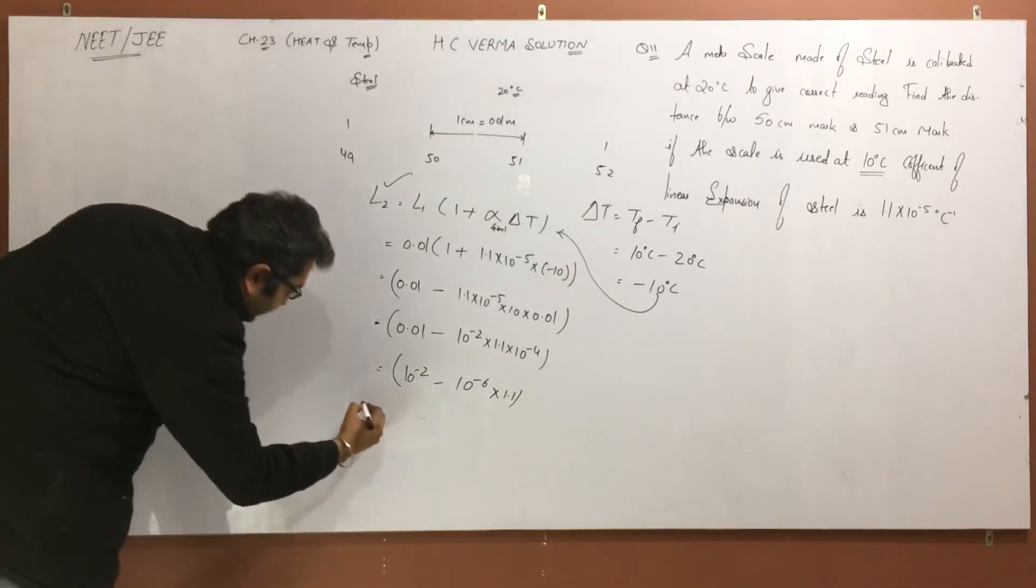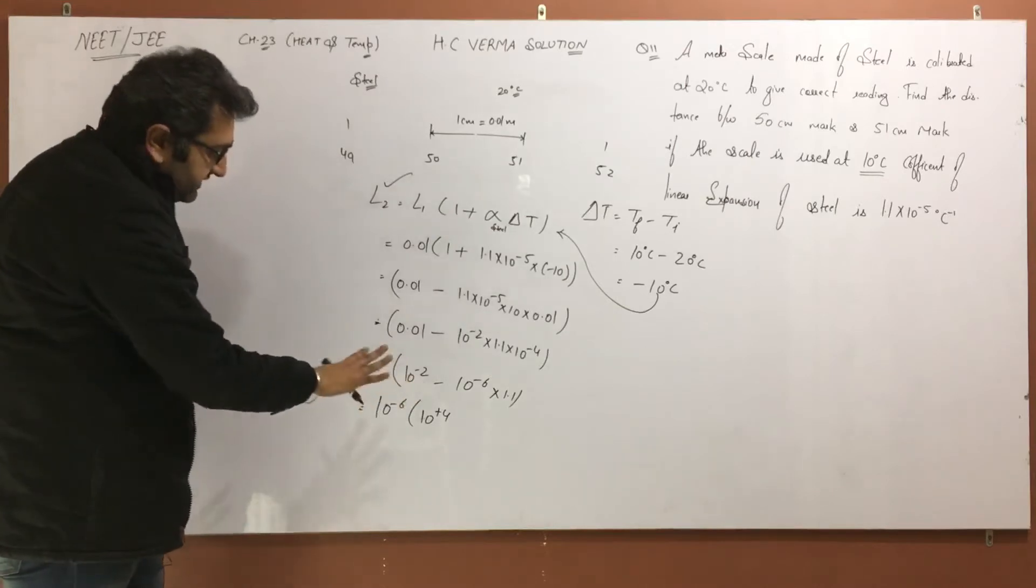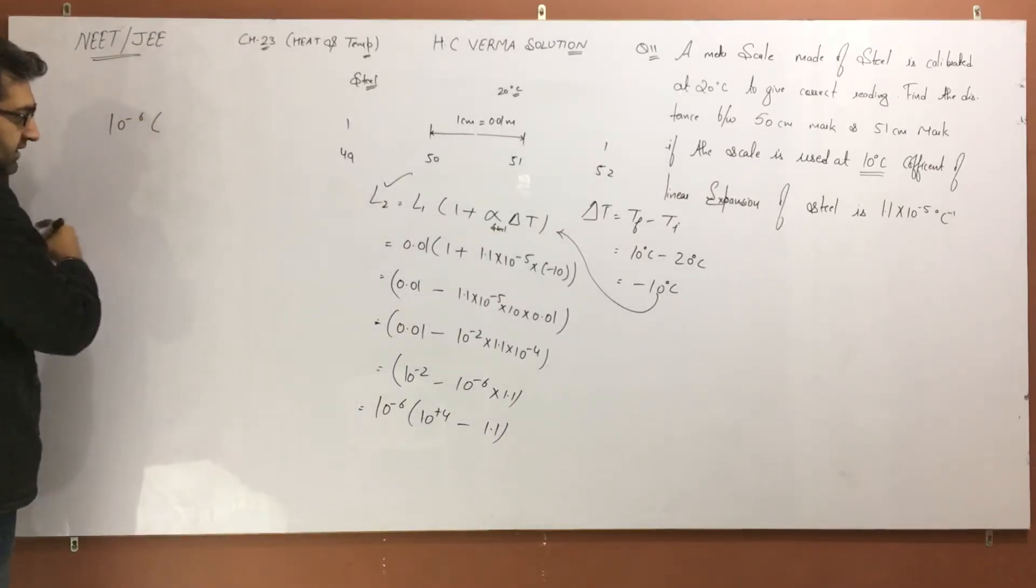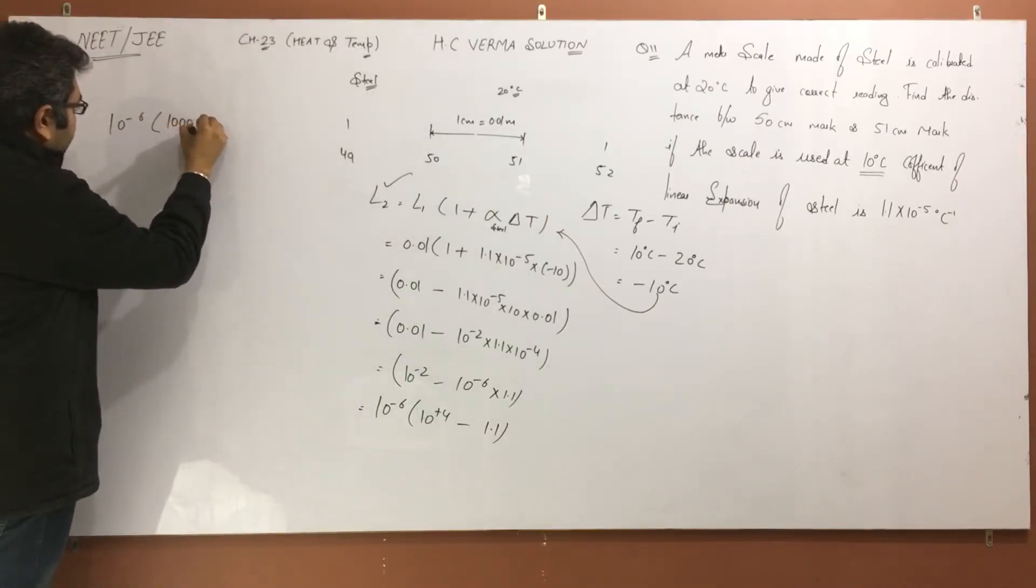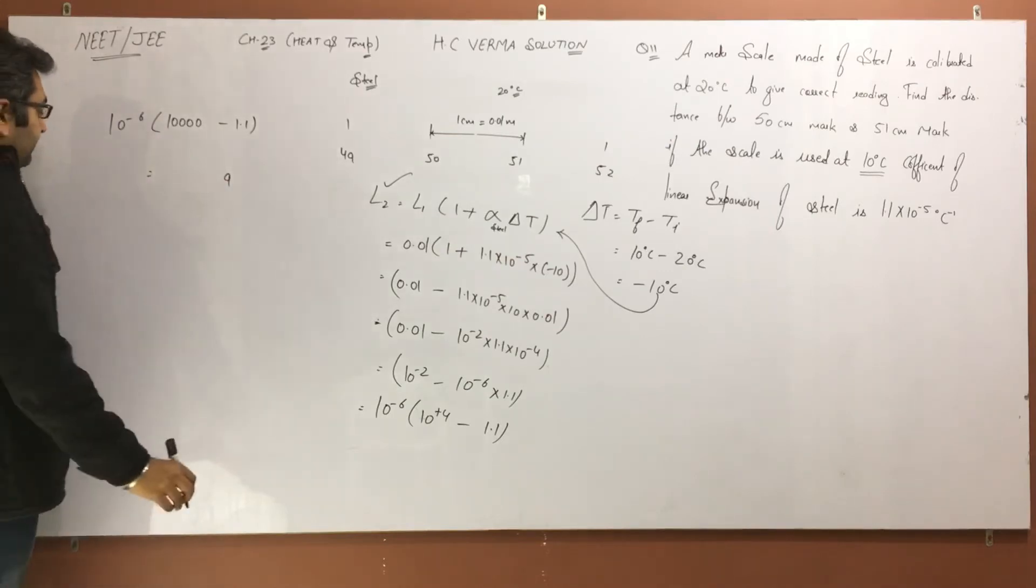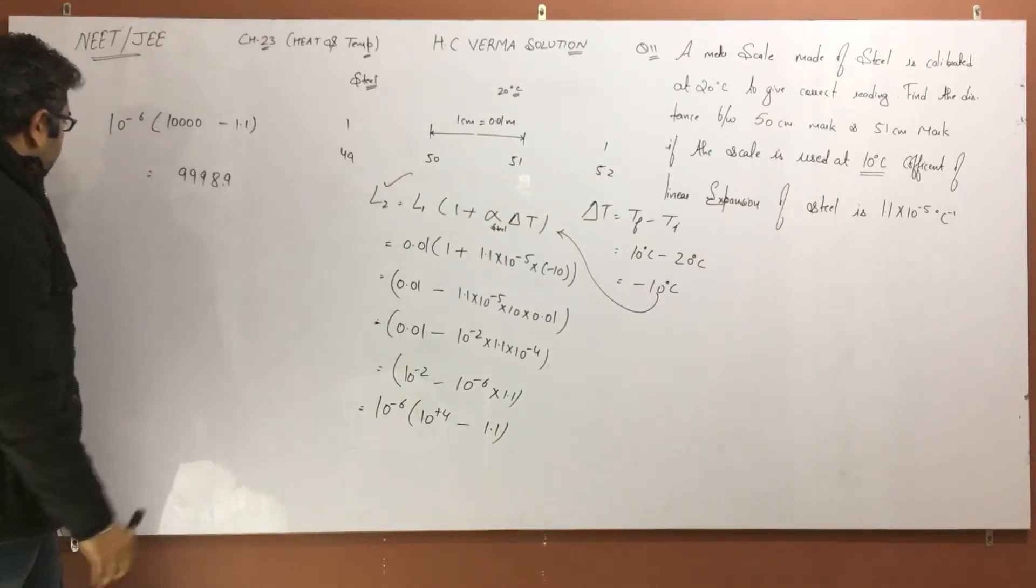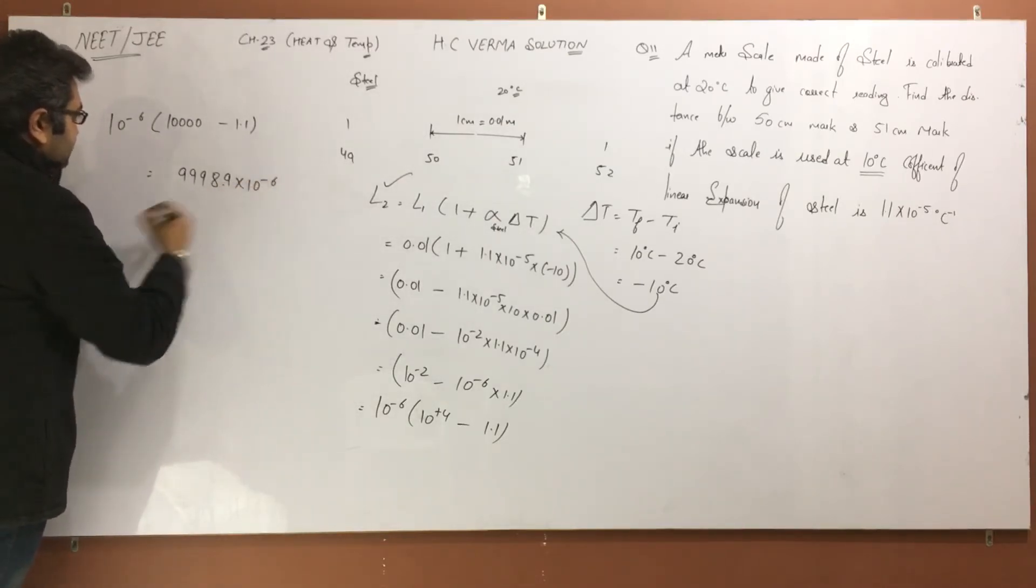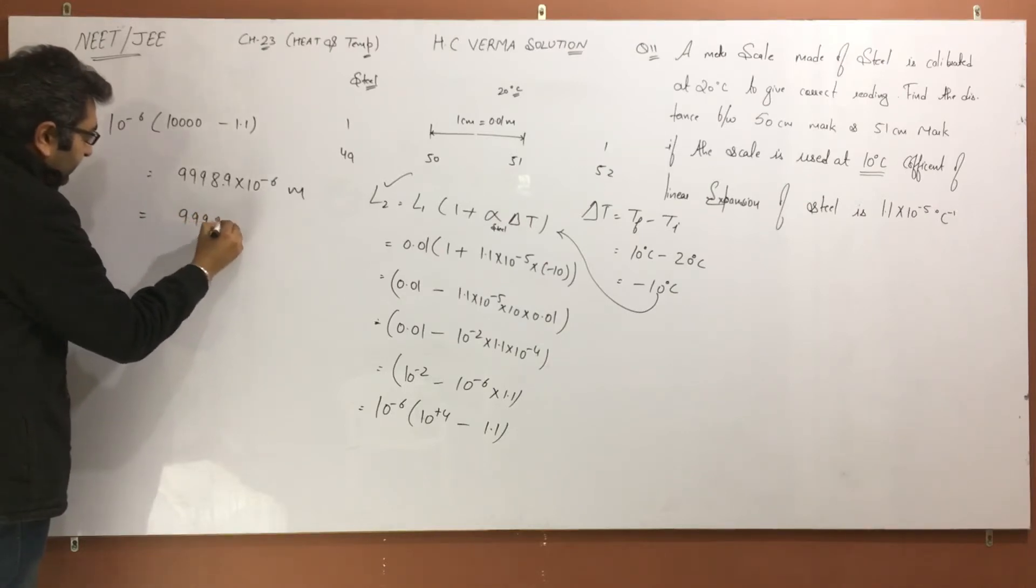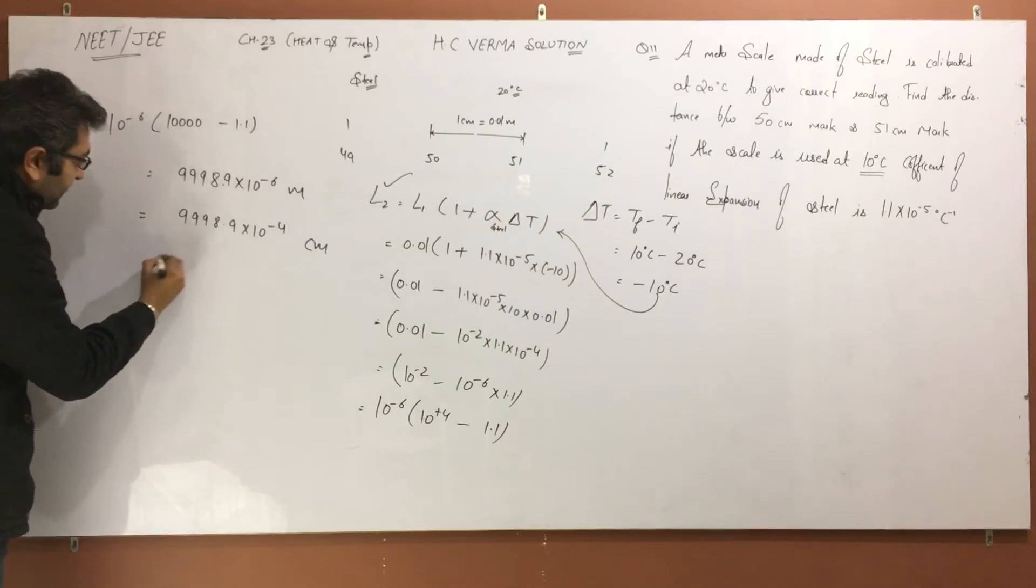0.01 say minus 10^-4 and 10^-2 multiply 1.1 × 10^-4, and 10^-2 and that will be 10^-6 multiply 1.1. 10^-4 × 10^-2 is 10^-6. That is 10^4 - 1.1 × 10^-6. By multiplying 100 this is 9998.9 × 10^-4.